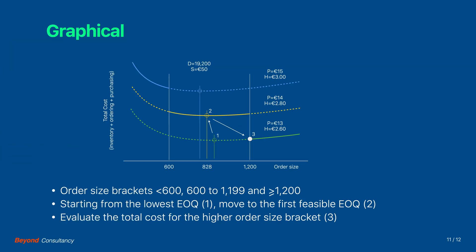We can illustrate the process graphically. We start from the lowest EOQ in point 1, move to the first feasible EOQ in point 2, and compare its total cost with the total cost of the bracket points of the higher order sizes, and decide to move to point 3, which indeed is the cheapest option.